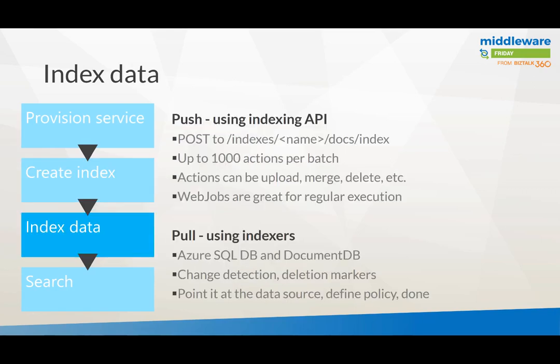The next step is indexing the data. There are two ways you can do it. You can either pull the data using indexers — for example, you can pull data from an Azure SQL DB or a DocumentDB, with change detection when things change, and then pull them from those sources. Or you can use the push mechanism — you can use the API to create the index, upload data, etc. A web job, for instance, would be a very good fit for having this done regularly to update your index or upload documents as necessary.